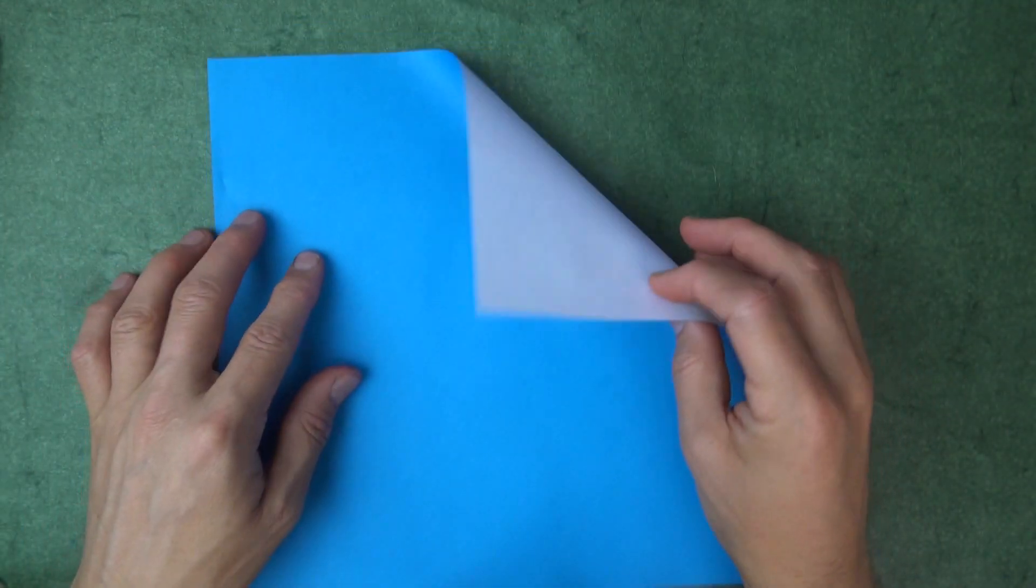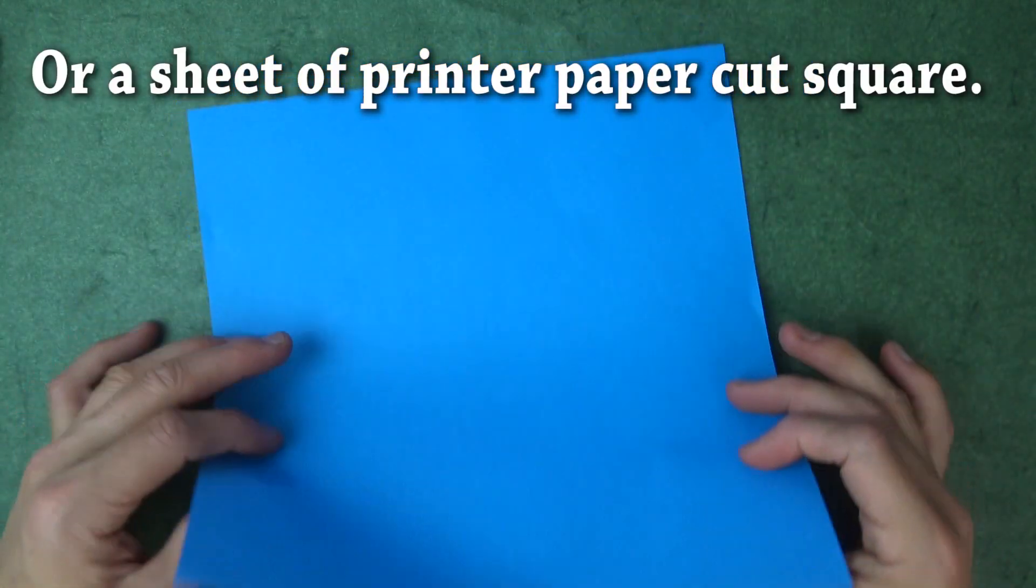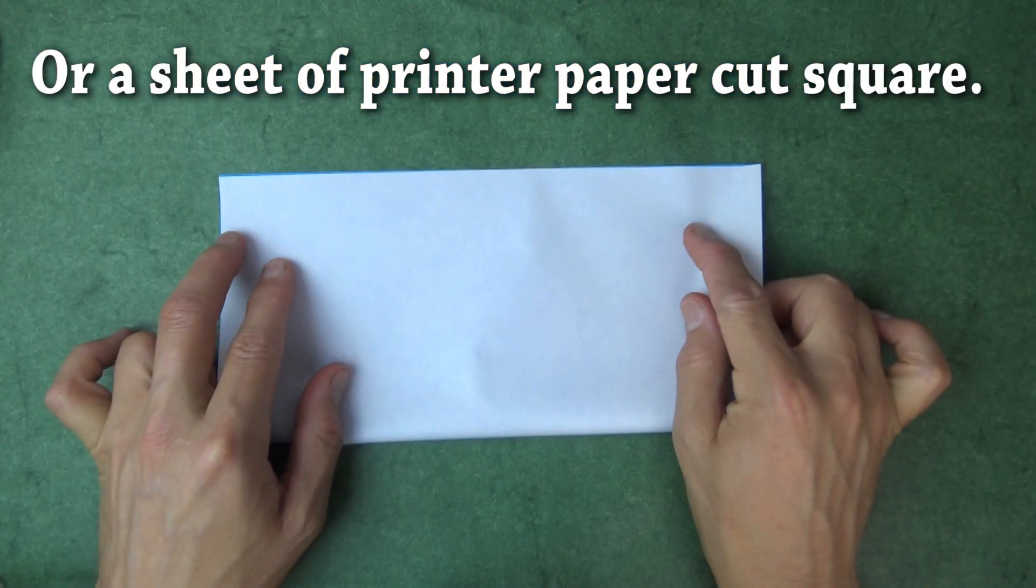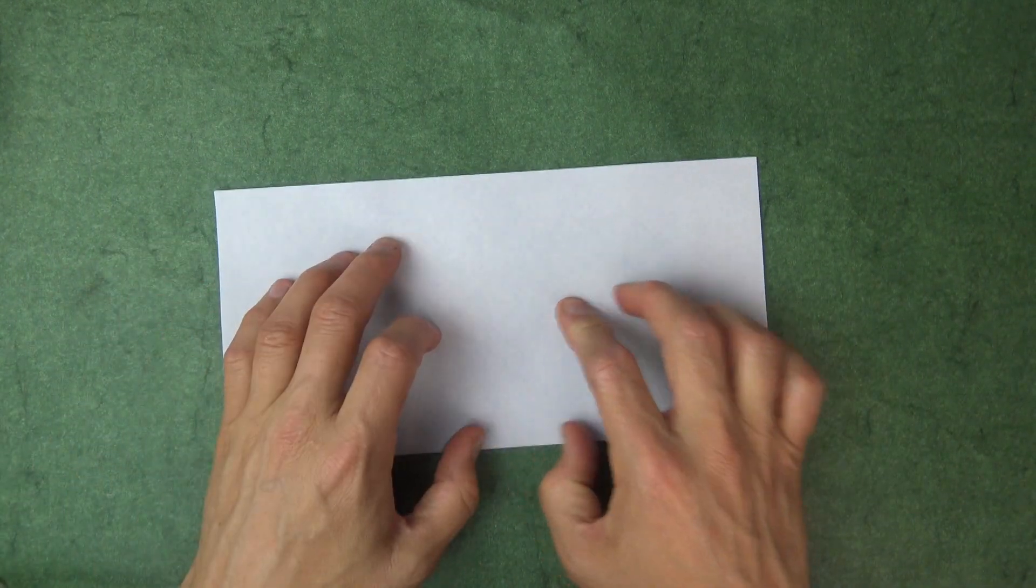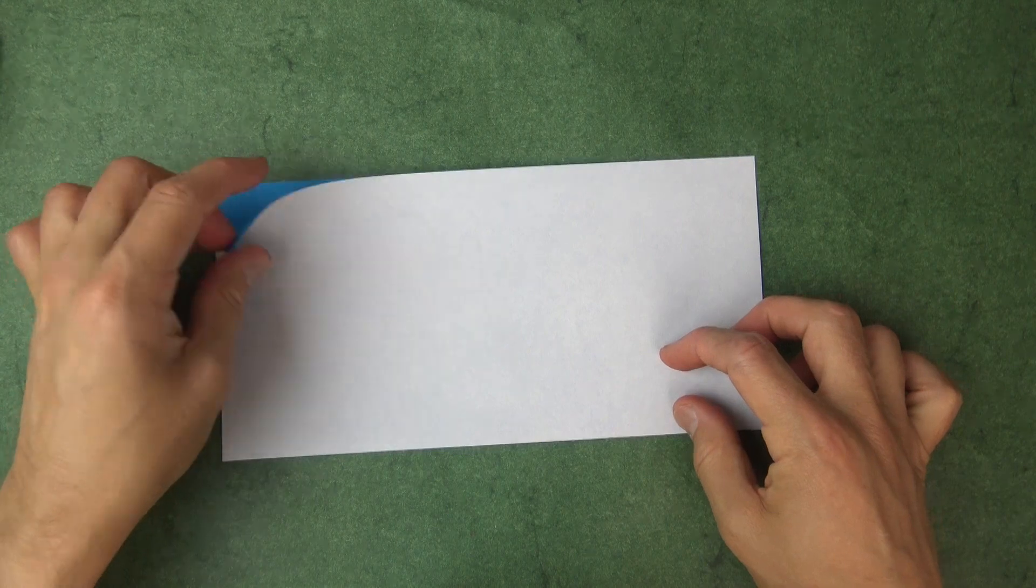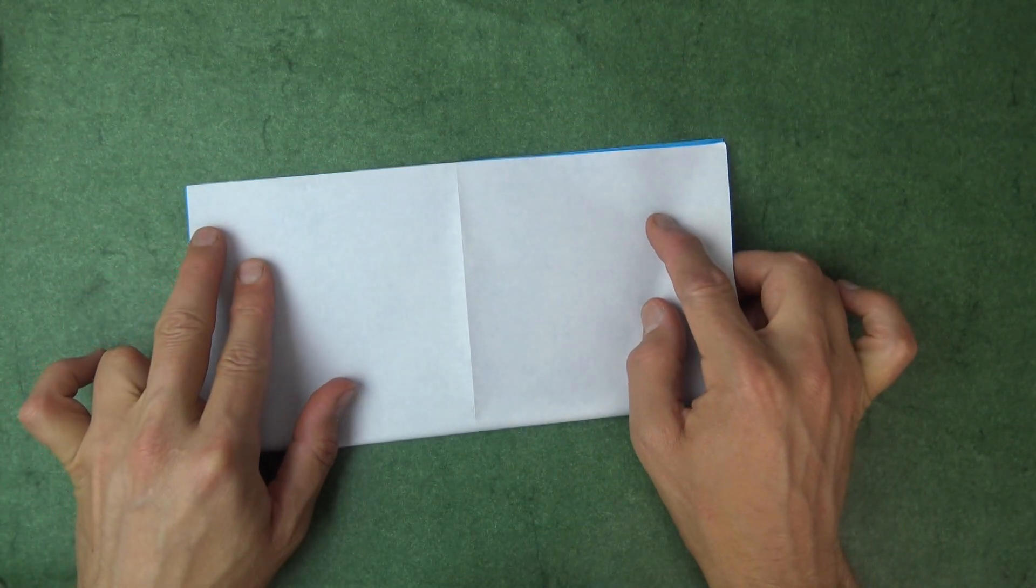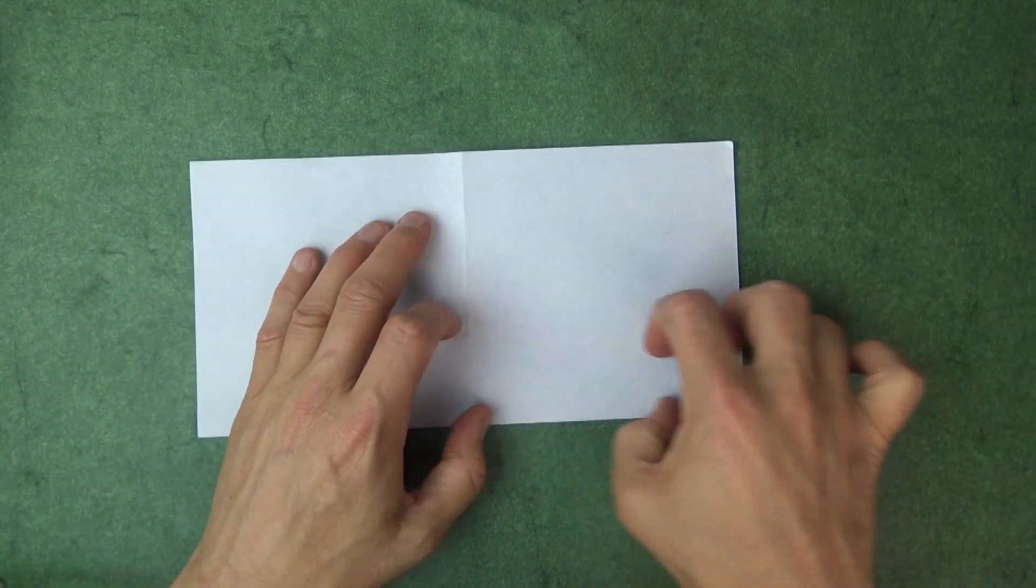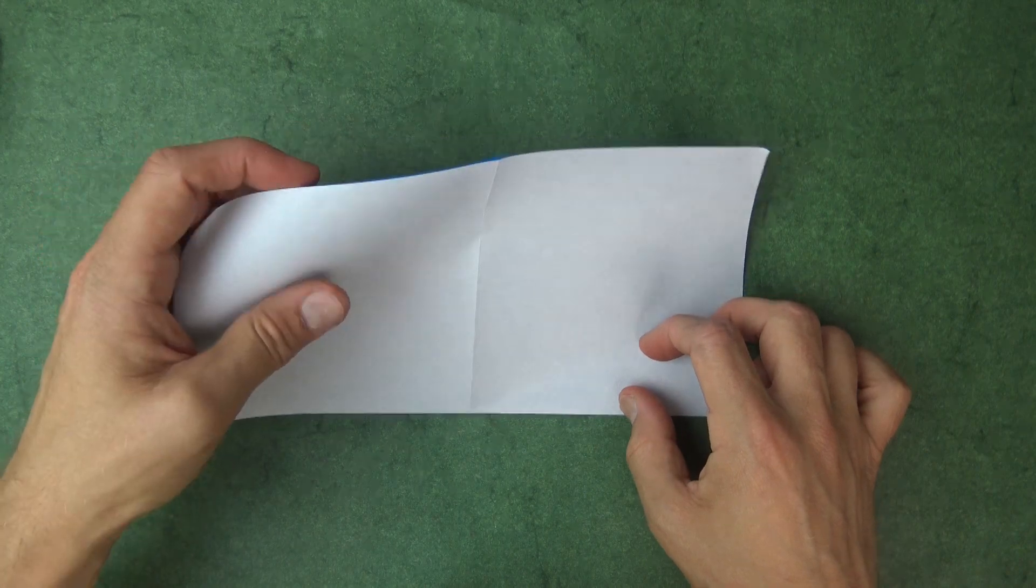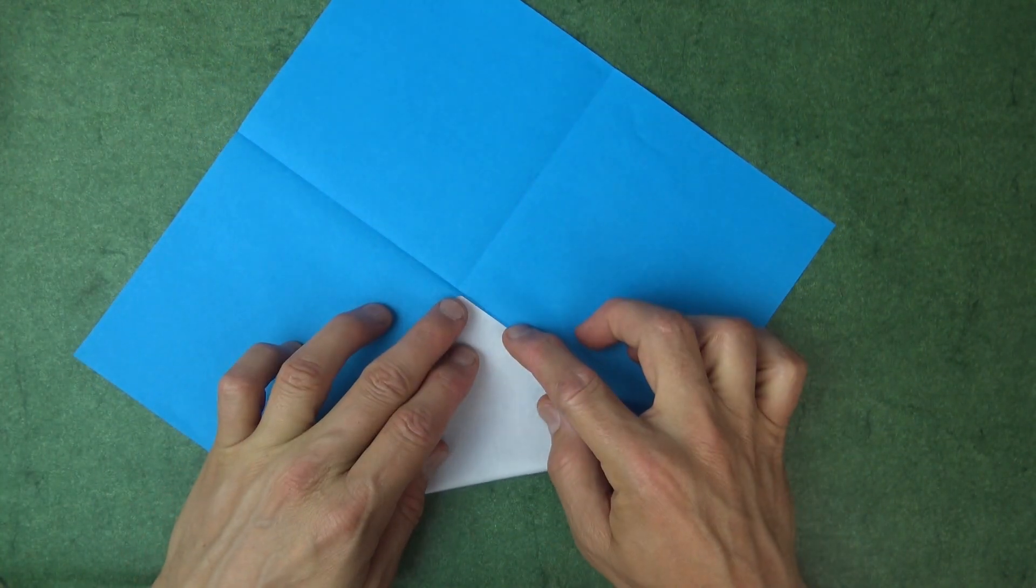Ready set here goes. Alright, so for this model I'm going to use a 10 inch square, but you could use a six inch square. Let's begin with the colored side up and fold in half. Unfold, rotate and fold in half in this direction. And unfold and blitz fold all the corners to the middle.